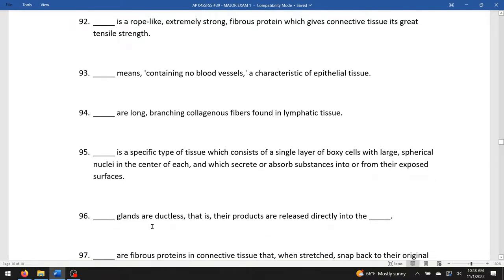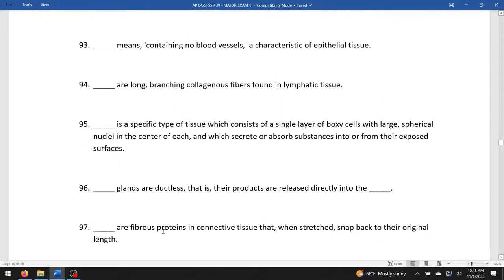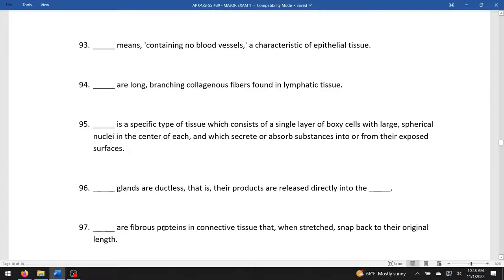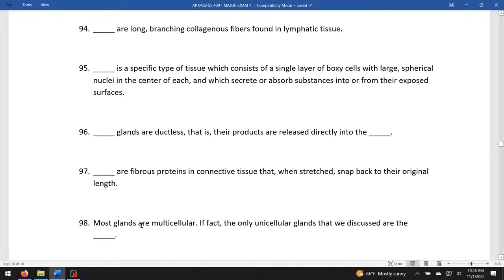Blank glands are ductless. Their products are released directly into the blood. That's endocrine. The only unicellular gland that we ever discussed are the goblet cells.